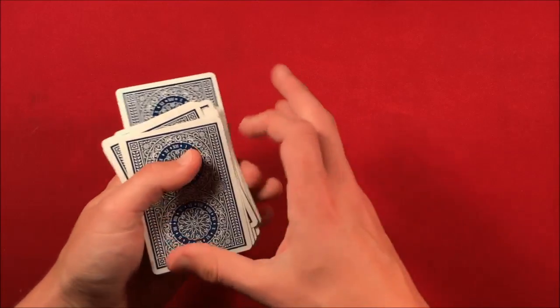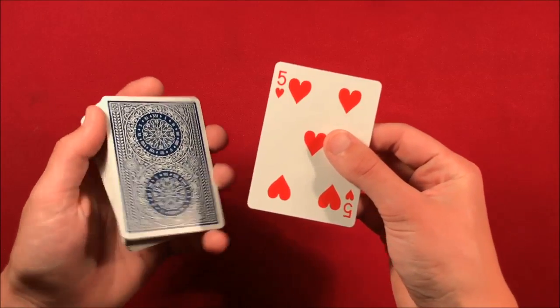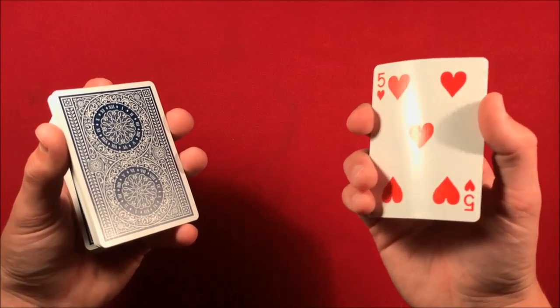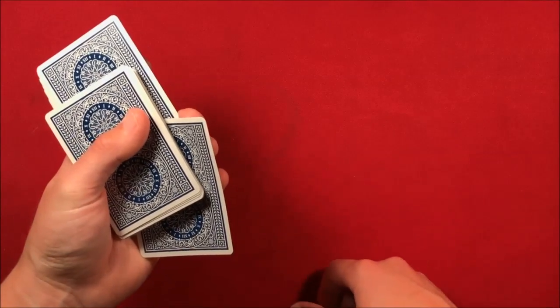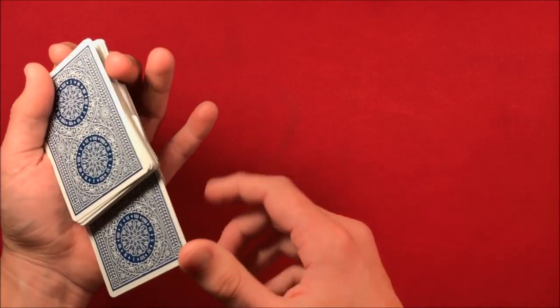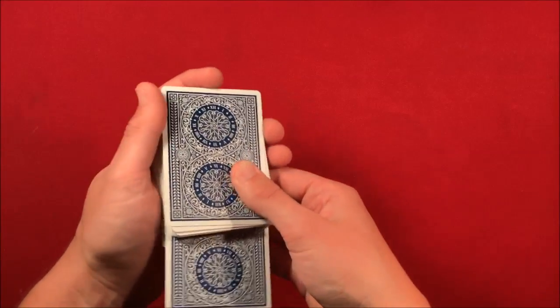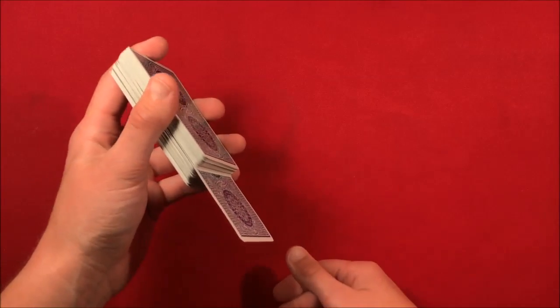So essentially, you're taking a random card from the deck and then you're doing a charlier cut while you flick over the spectator selection. This is kind of exaggerated, but as you guys can see, the card is going to be a little bit outjogged when you shoot the card over, so you're not putting it flush with the deck.